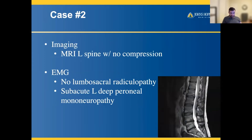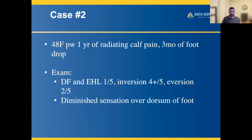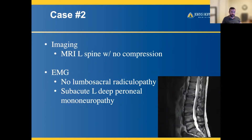On the MRI, you can see that there is no compression. Given the fact that this was a weakness of eversion and not of inversion, one may not even need to get an MRI of the lumbar spine to evaluate for a disc herniation that may also cause a foot drop, because eversion weakness points more toward a peroneal neuropathy.